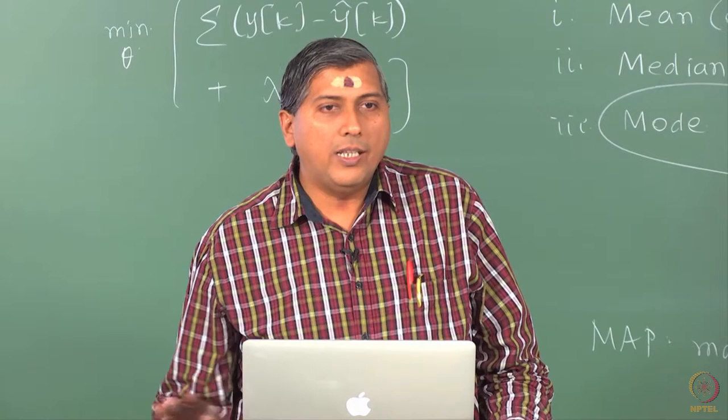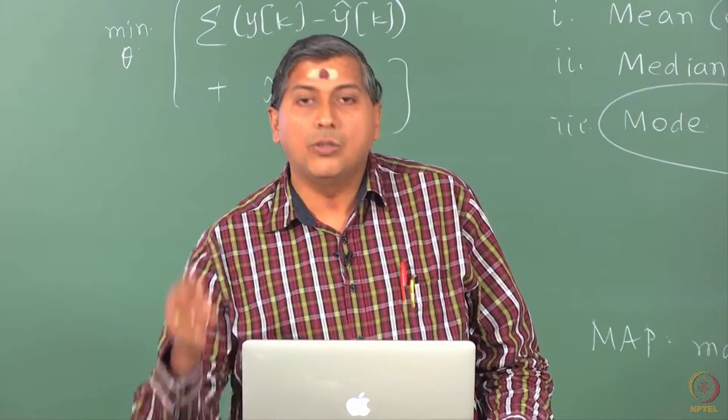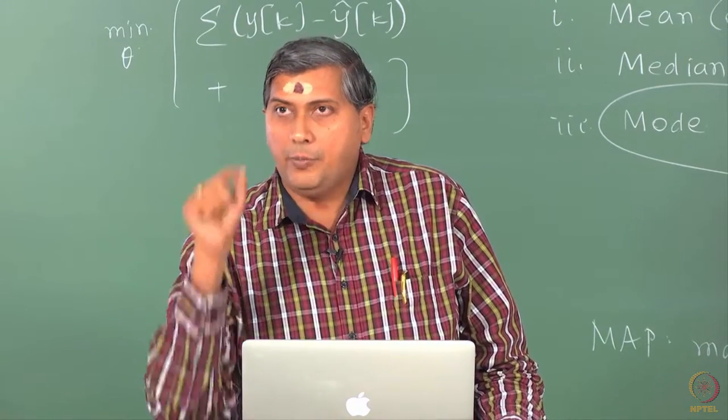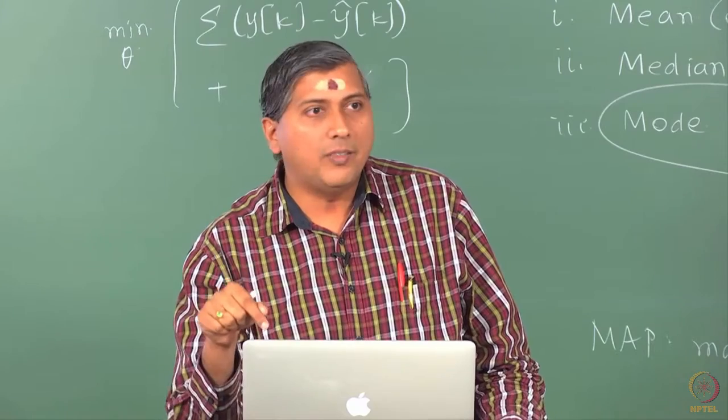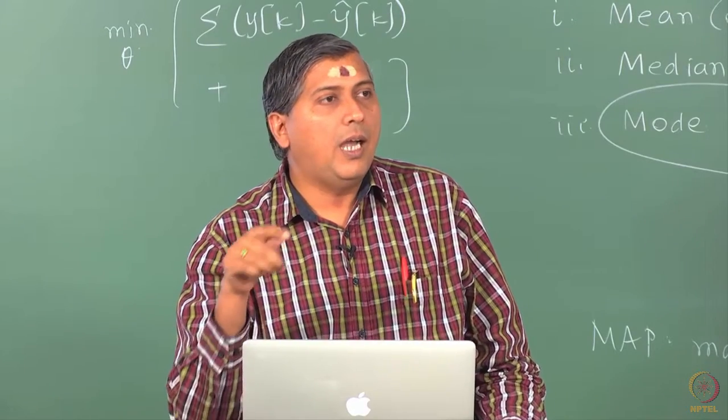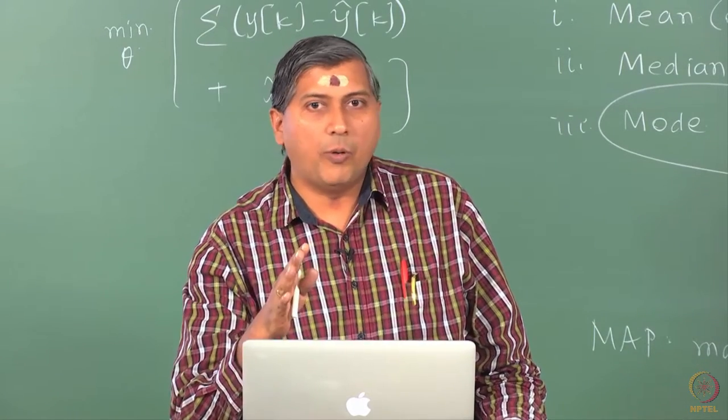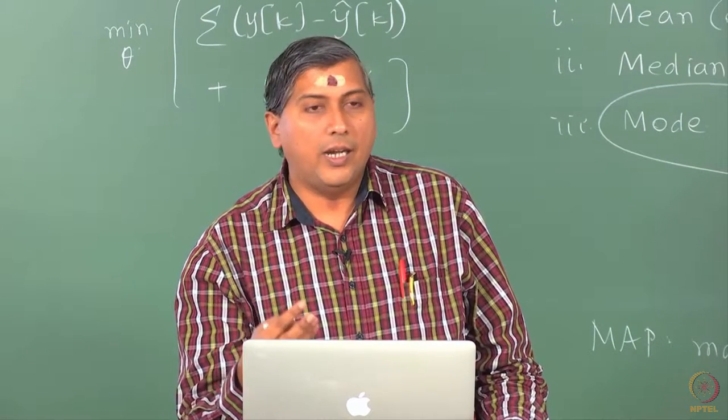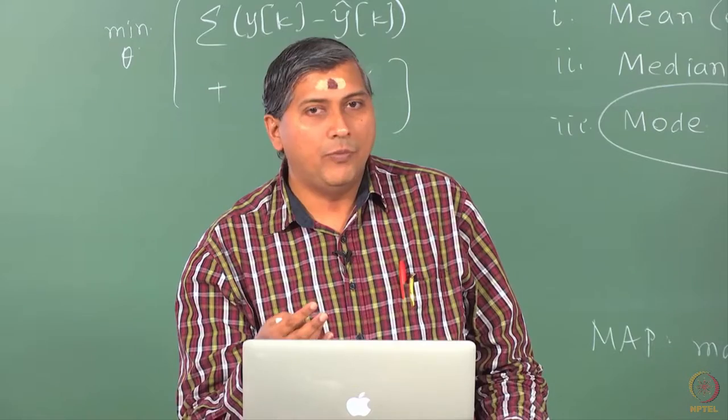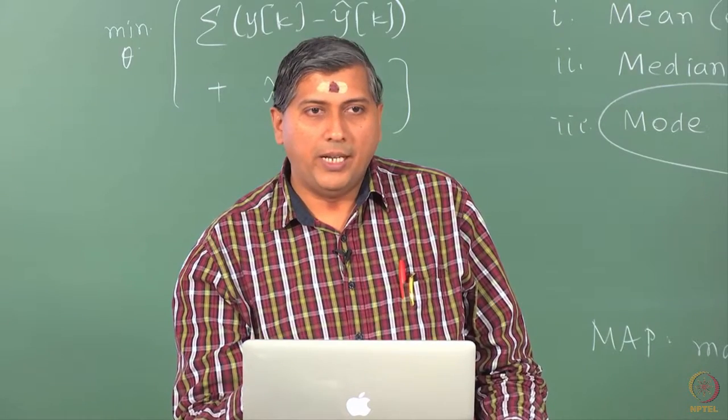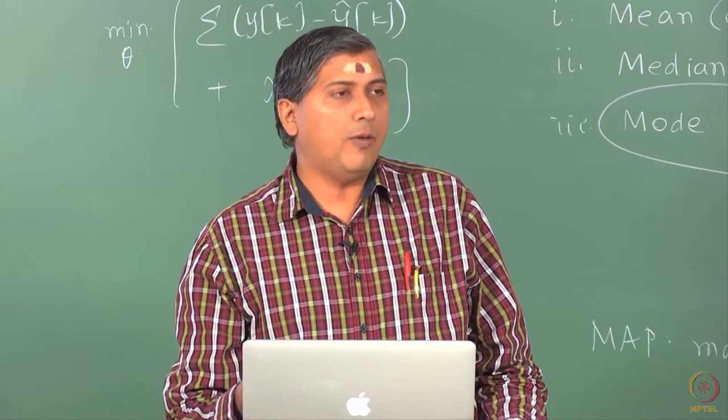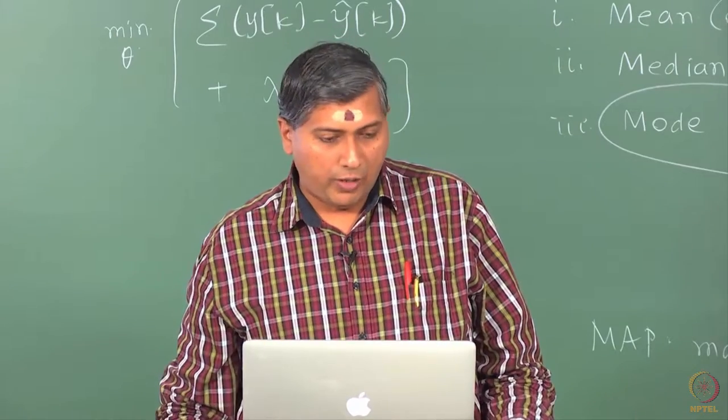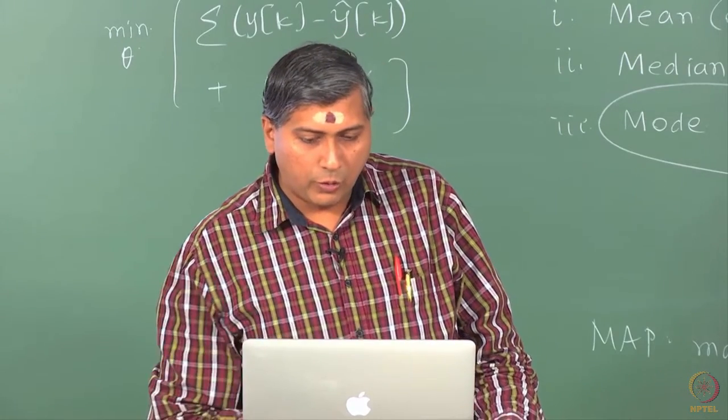But with a Gaussian posterior, all these different estimators are simple. So, to summarize, we obtain the posterior and derive point estimate from the posterior and you can derive any number of point estimators. Three are popular, the mean that is the conditional expectation, the MAP which is the mode and then the median. And if you have a Gaussian posterior, it does not matter what you are working with. So, let us very quickly go through an example.